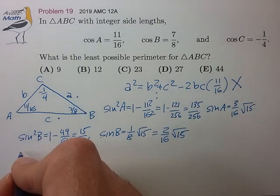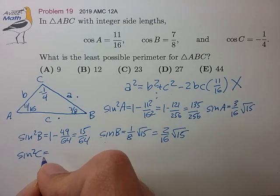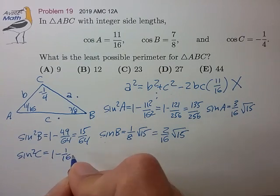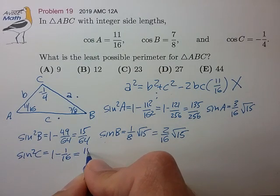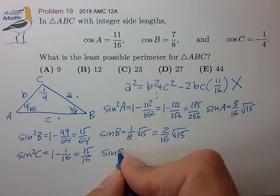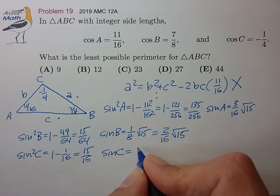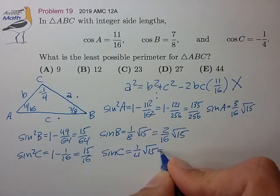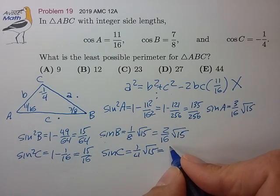Let's do one more for the sine squared C: 1 minus 1/16, which is 15/16. So sine of C is equal to 1/4 root 15. Let's form the same denominator like we did before: 4/16 root 15.